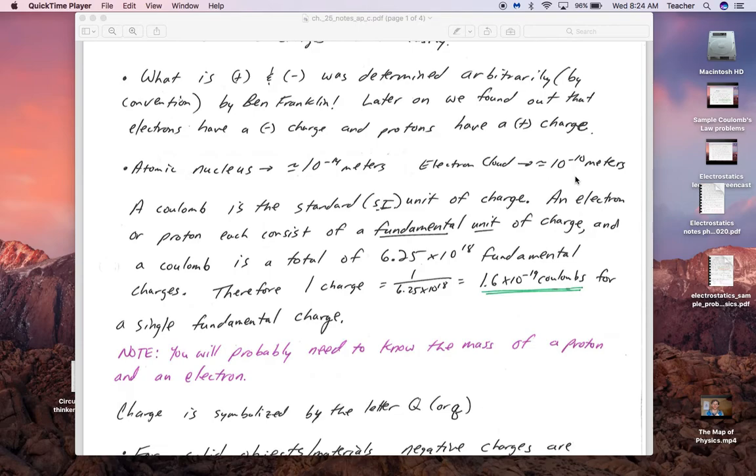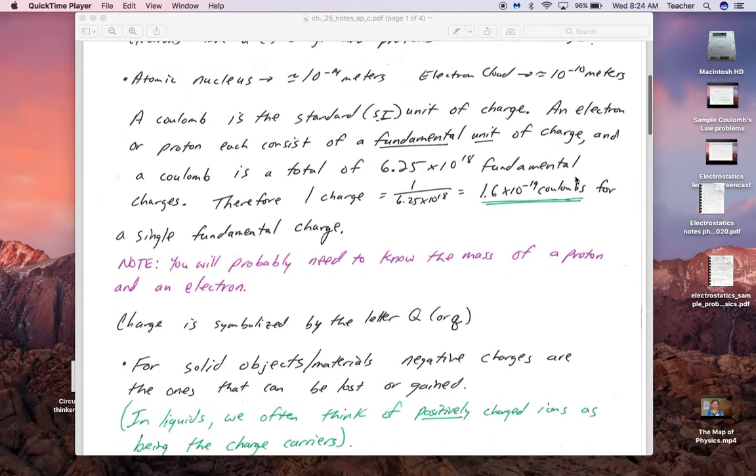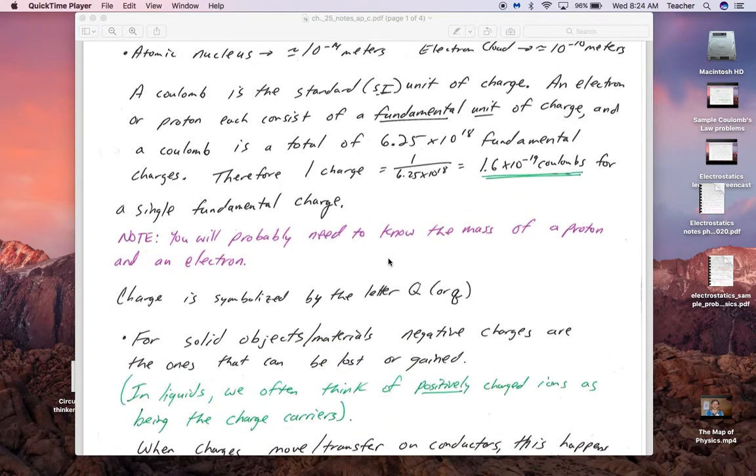Coulombs is the standard unit of charge, but an electron or proton each are considered having a fundamental unit of charge, which is 1.6 times 10 to the negative 19th coulombs. That means that 6.25 times 10 to the 18th charges equal 1 coulomb.